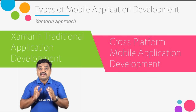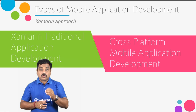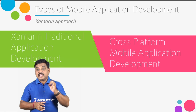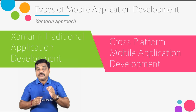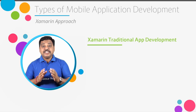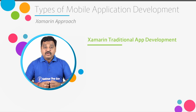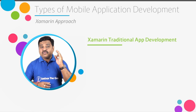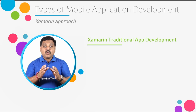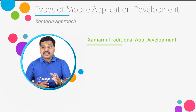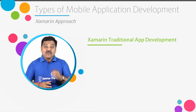Finally, when it comes to the Xamarin approach, Xamarin supports two types of application development models. First, Xamarin traditional application development. Second, cross-platform mobile application development. Let us first understand the Xamarin traditional model. Whenever we develop applications for Android, iOS, and Windows, the UI will be platform specific. But the business logic or functionalities required for the application remain the same for all platforms.